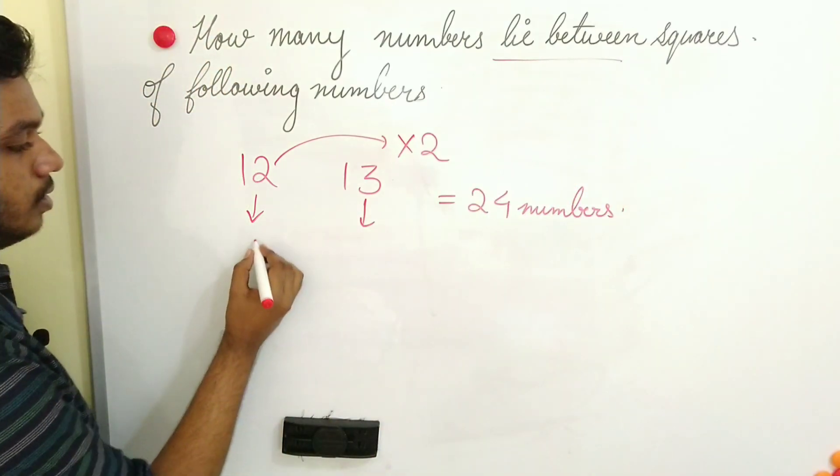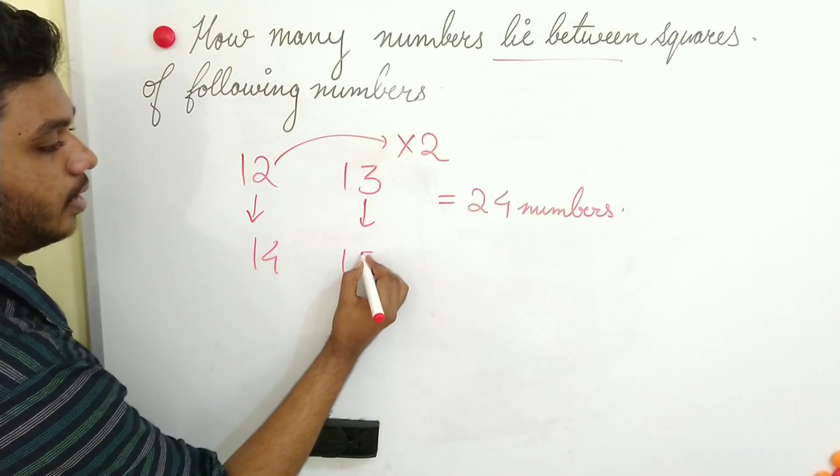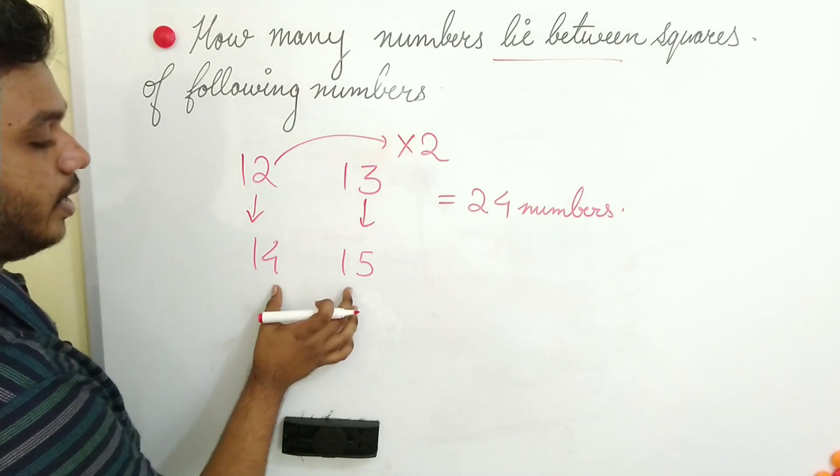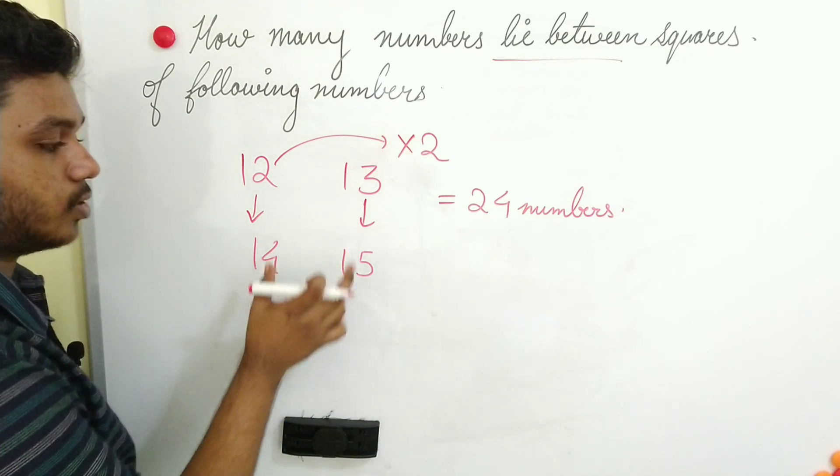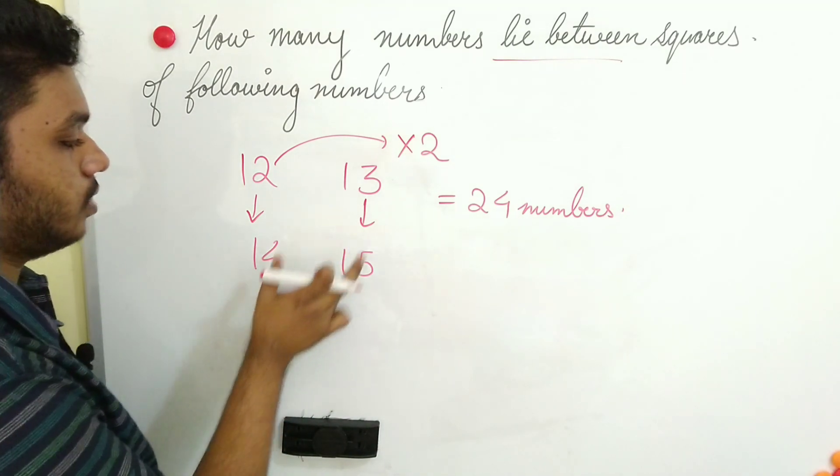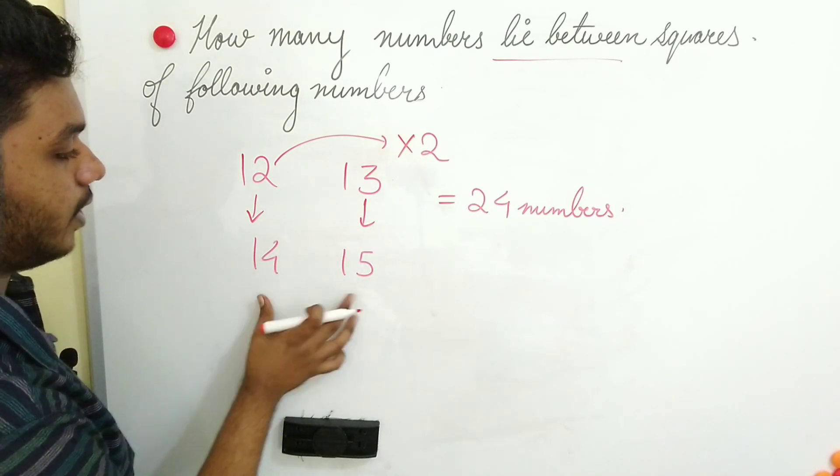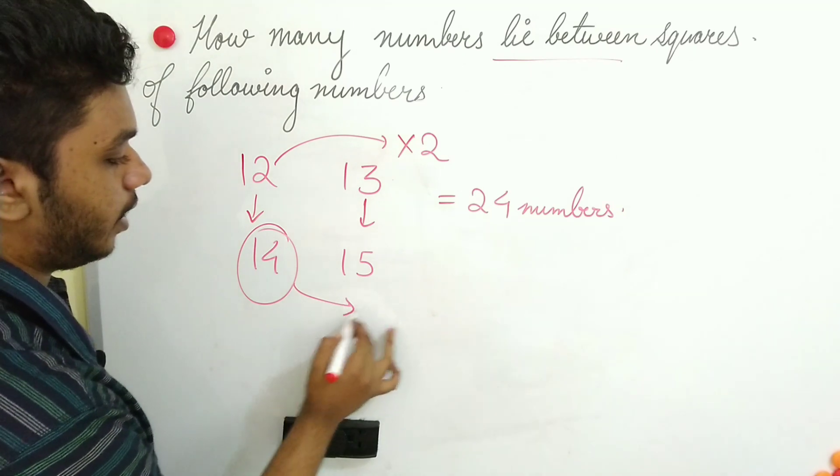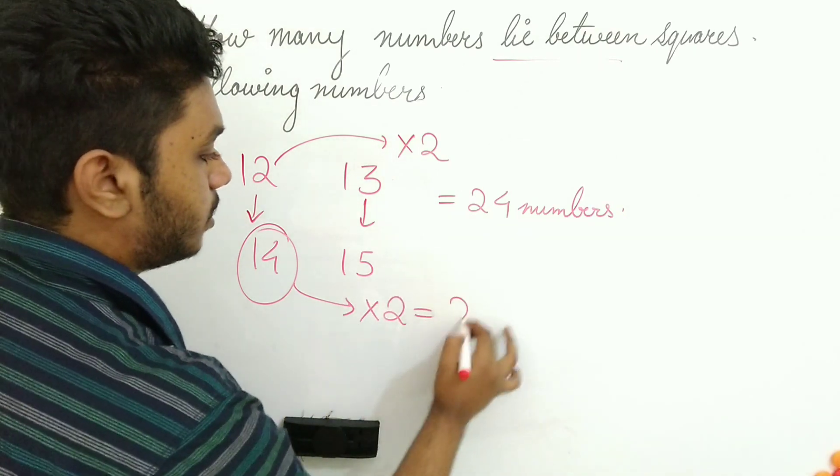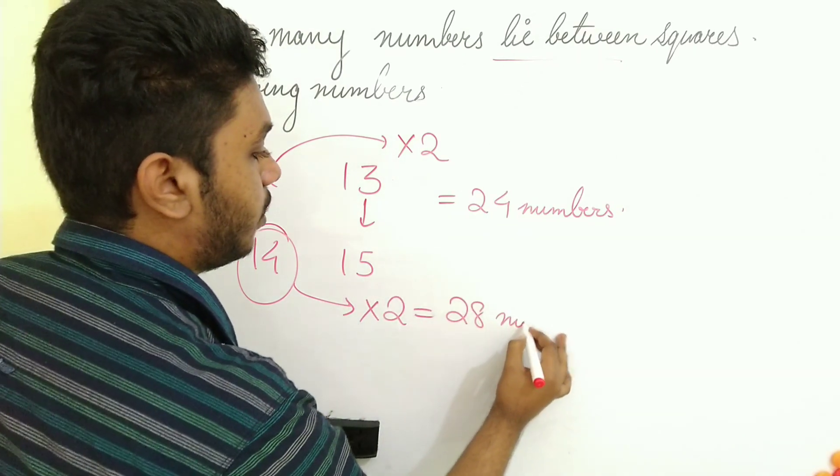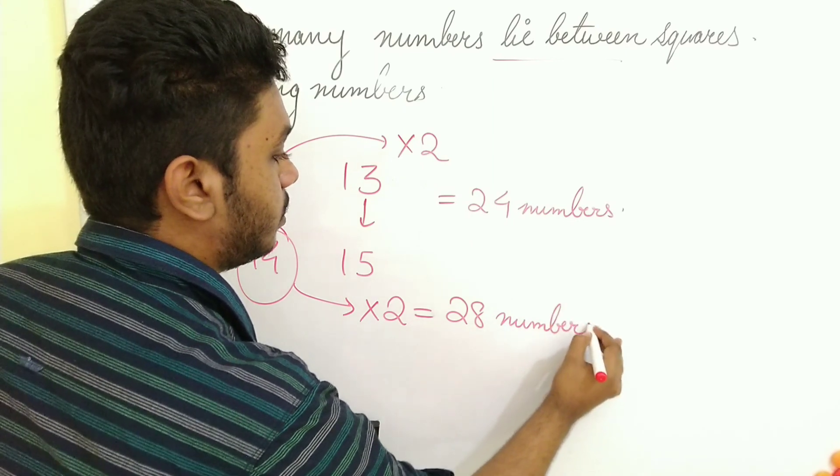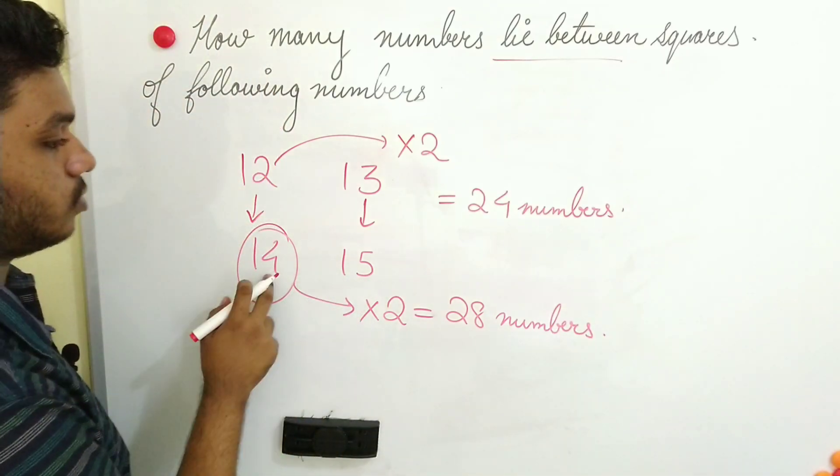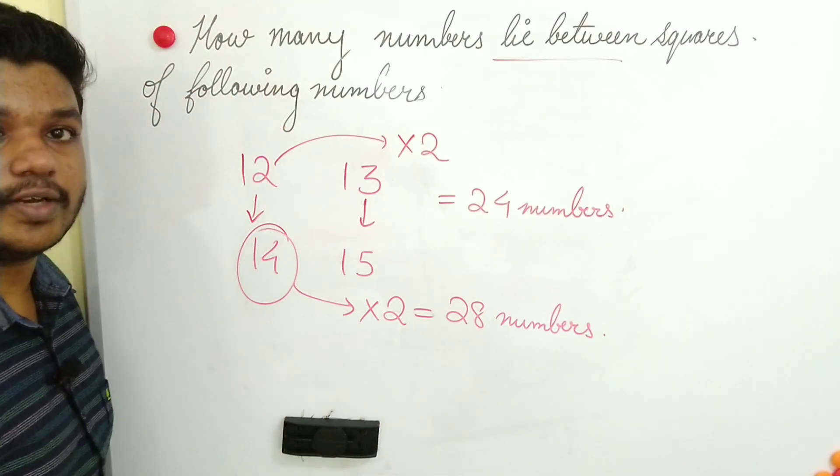One more: 14 and 15. How many numbers are lying between squares of these two numbers? No need to find squares. Just find out which is the smallest among these. This is 14. 14 into 2 will give me the answer as 28. So there will be 28 numbers between these two squares, squares of these two numbers. Directly I can find out.